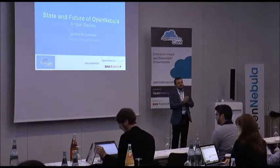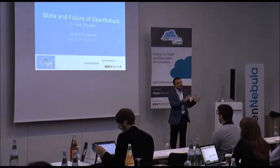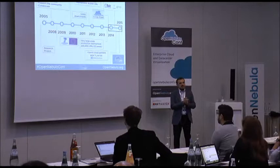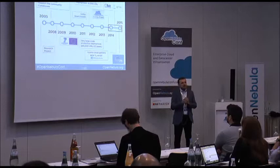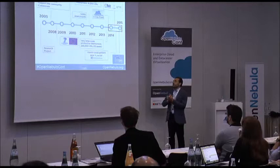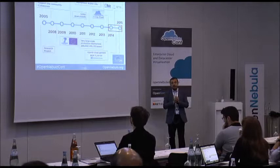In the following 20 minutes, we're going to try to summarize our progress and achievements during the last year of the project, since we organized our first OpenNebula conference here in Berlin in October 2013. This is the timeline of the project — we started in November 2007. Here we show the main milestones, but in this presentation we're going to focus on this last year, and describe what we have achieved and what you can expect in the coming months.